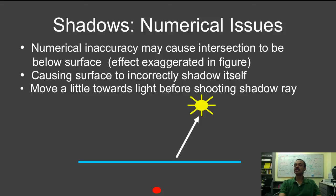There's a simple solution, which is you move a small epsilon towards the light, maybe one part in a thousand or one part in a million, before shooting the shadow ray.